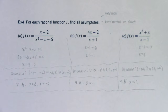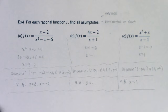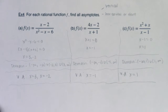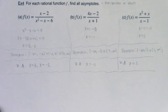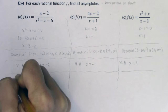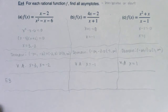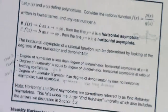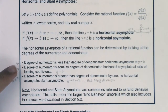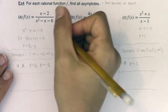Now we need to talk about end behavior — specifically, do I have horizontal or slant asymptotes or potentially arrows? When it comes to end behavior, you've got to figure out what the degree in your numerator is and what the degree in your denominator is, and then figure out which of three cases it falls into. Let me do some scratch work.